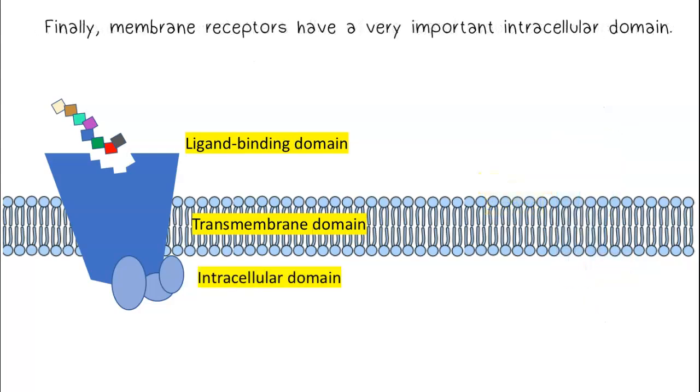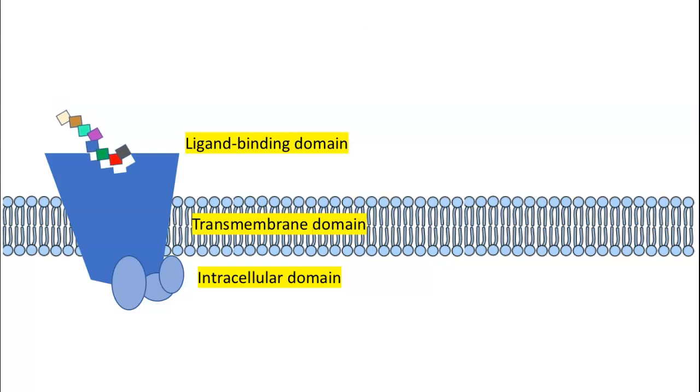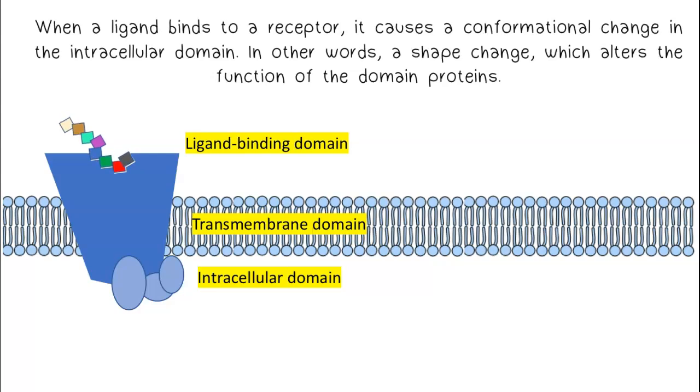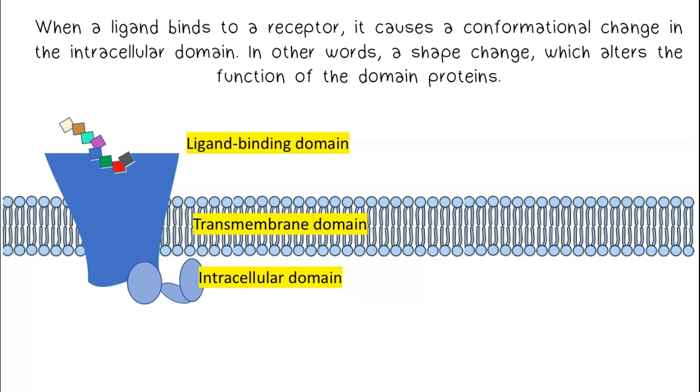Finally, membrane receptors have a very important intracellular domain. When a ligand binds to a receptor, it causes a conformational change in the intracellular domain. In other words, a shape change which alters the function of the domain proteins.